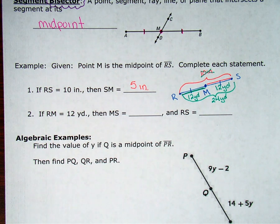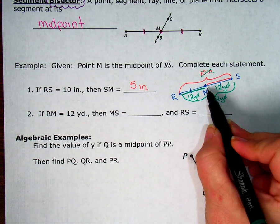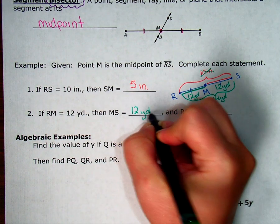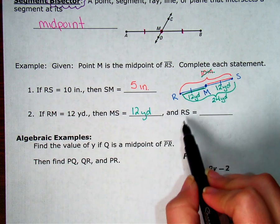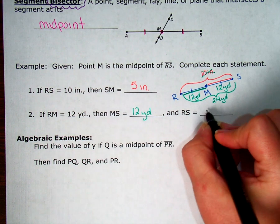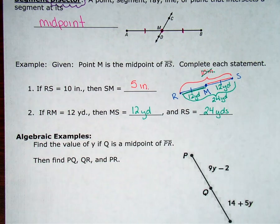So now let's see what it's asking me. It wants to know how far is it from M to S. So M to S is 12 yards. And then it's asking me how far is it from R to S. R to S is the whole thing, 24 yards.